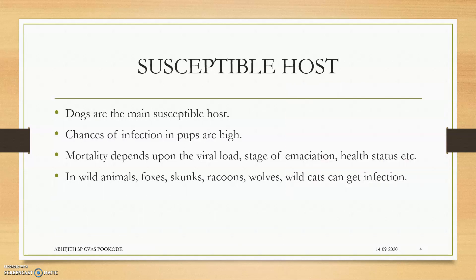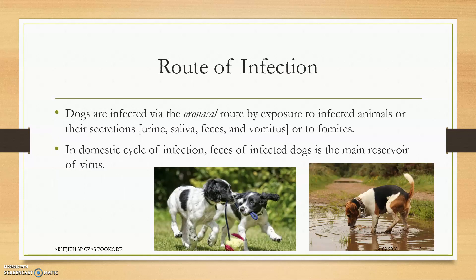Dogs are the main susceptible host, and pups have a higher chance of infection. As with every disease, mortality depends on viral load, stage of immunization, health status, etc. Wild animals can also get the infection. Dogs are infected via the oral or nasal route by exposure to infected animals' secretions — specifically by coming into contact with urine, saliva, feces, and vomitus of an infected dog. In the domestic cycle of infection, feces of the infected dog is the main reservoir of the virus.